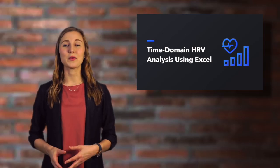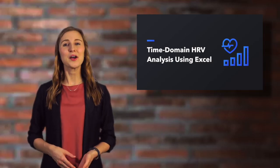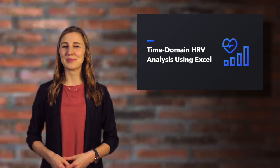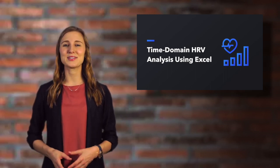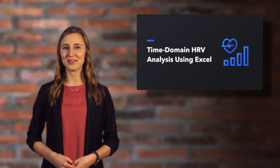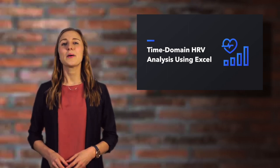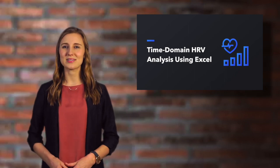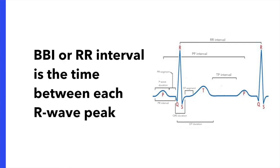Heart rate variability, or HRV, provides a non-invasive method of analyzing the autonomic nervous system and can offer valuable insights into an individual's physical and mental health. HRV is calculated by looking at the fluctuations between individual heartbeats. The time between each consecutive heartbeat is called the RR interval, or beat-to-beat interval.